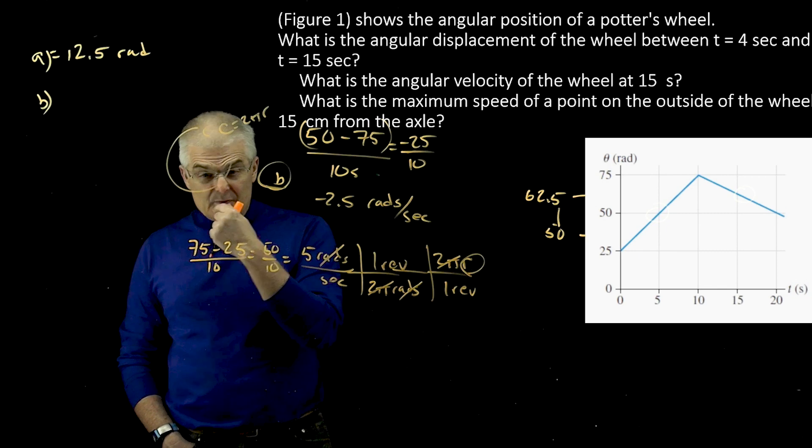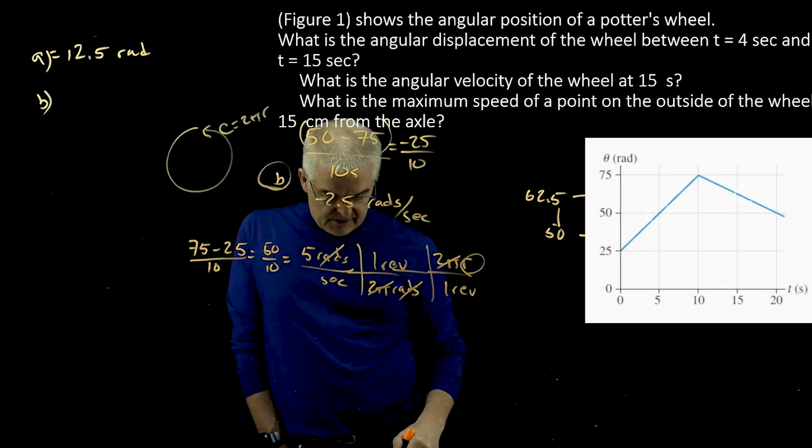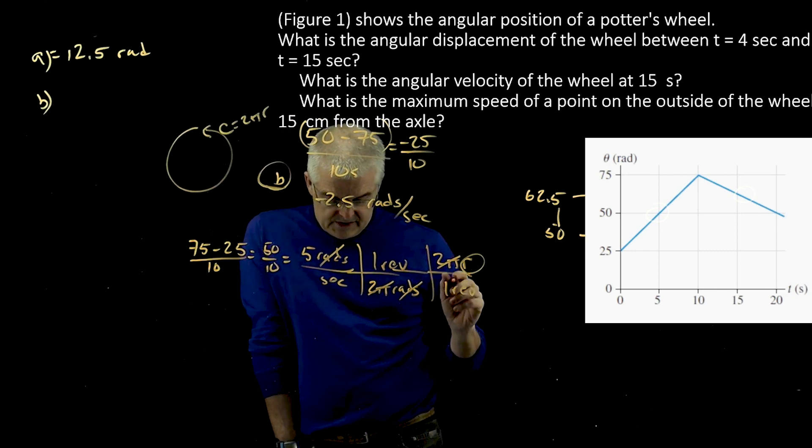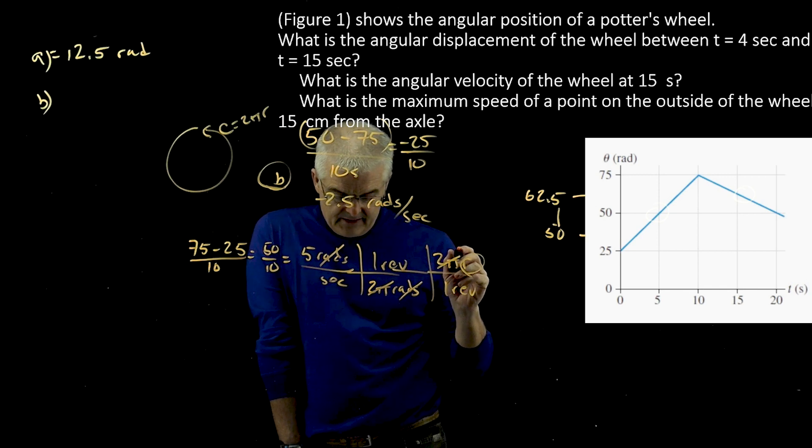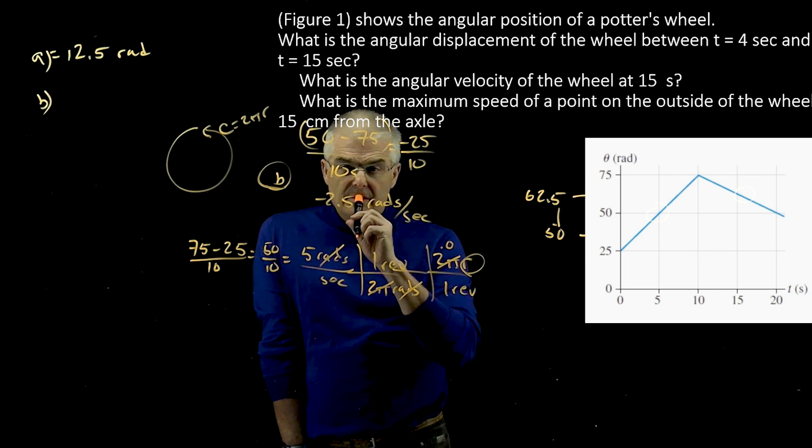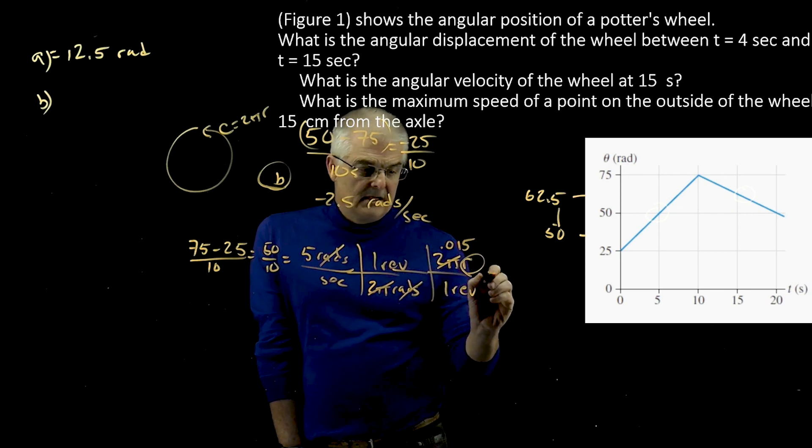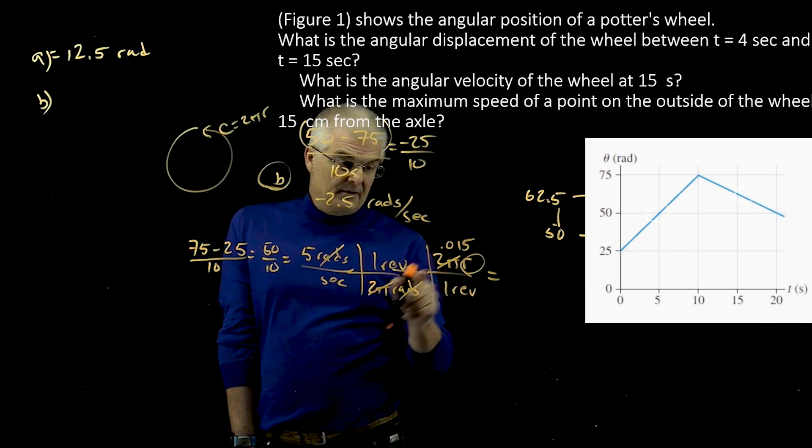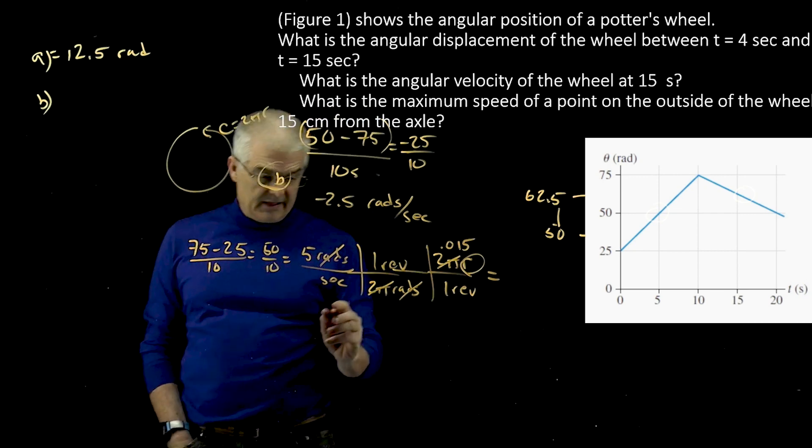What was the radius? It was 15 centimeters, so this would be 0.15. The outside was at 0.15. And then you just take 5 times 0.15, and these 2 pi cancels, and you get the answer of 0.75 meters per second.